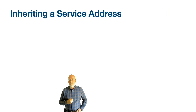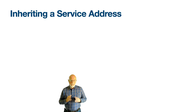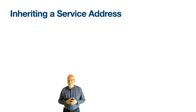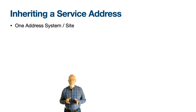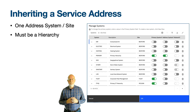Service addresses can either be added to each location or asset in the address information section on the main tab of those applications, or alternatively a service address can be derived from an ancestor location, or in the case of an asset from its location. Each site in Maximo can have one address system, which is defined from the manage systems action in the locations application. The address system must be a hierarchy but it need not be the system that is marked as the primary system, although often it is.